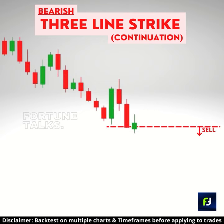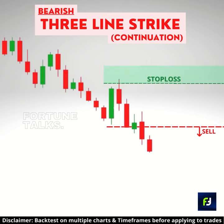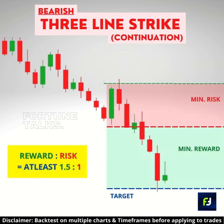You can take a short position once the price falls below the fourth candle and place the stop loss above the fourth candle. Reward to risk can be at least 1.5 to 1.